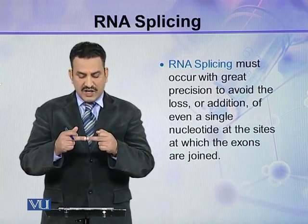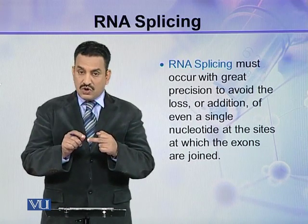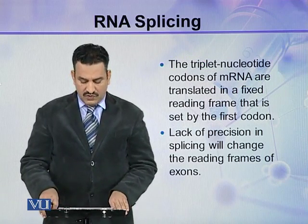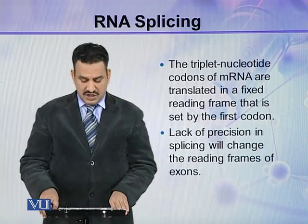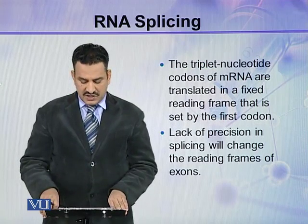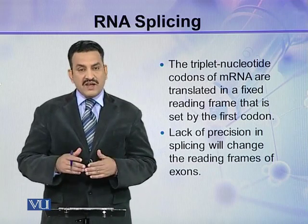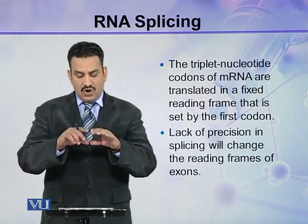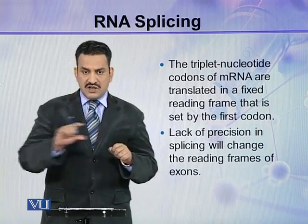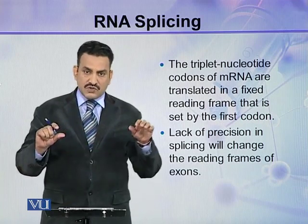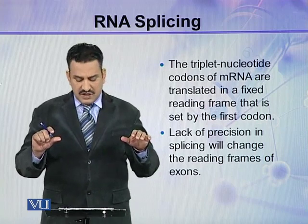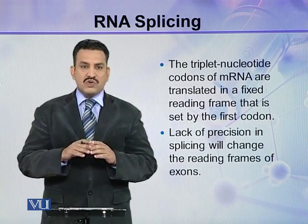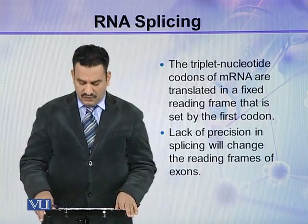At the joining point of two exons, there must not be even the loss of a single nucleotide. This is because the triplet nucleotide codons of mRNA are translated in a fixed reading frame set by the first codon. If even one nucleotide is missed at any point, this will disturb the entire reading frame of all subsequent codons.